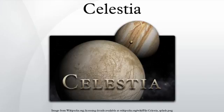Celestia is a 3D astronomy program created by Chris Laurel. The program is based on the Hipparcos catalog and allows users to travel through an extensive universe, modeled after reality, at any speed, in any direction, and at any time in history. Celestia displays and interacts with objects ranging in scale from small spacecraft to entire galaxies in three dimensions using OpenGL, from perspectives which would not be possible from a classic planetarium or other ground-based display. NASA and ESA have used Celestia in their educational and outreach programs, as well as for interfacing to trajectory analysis software.